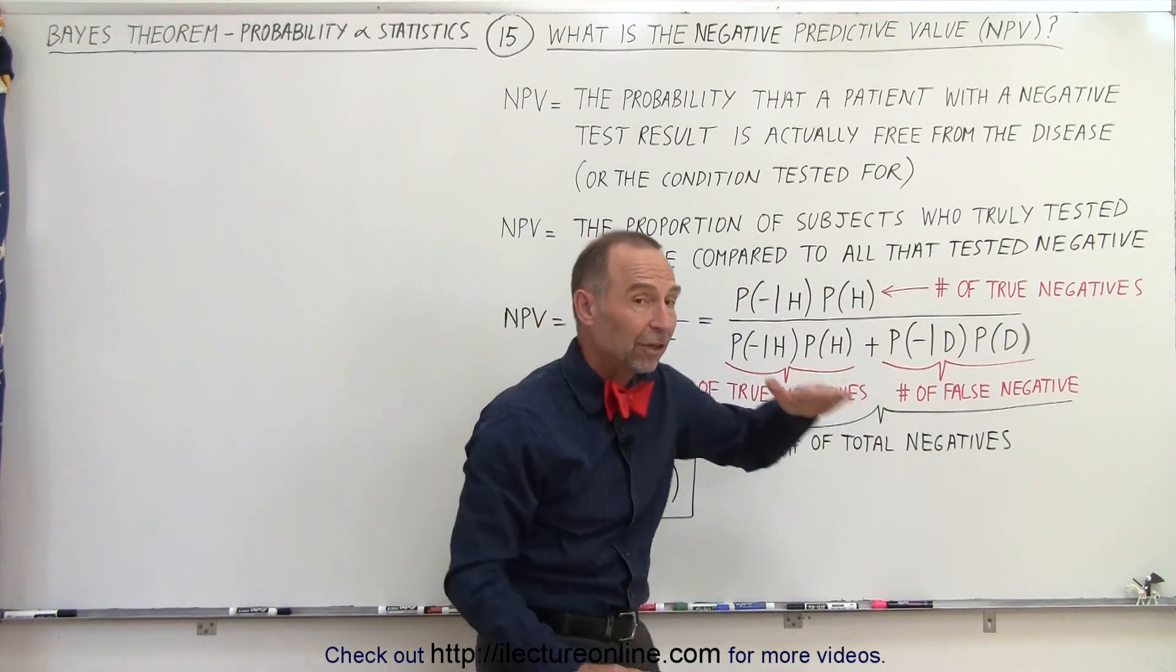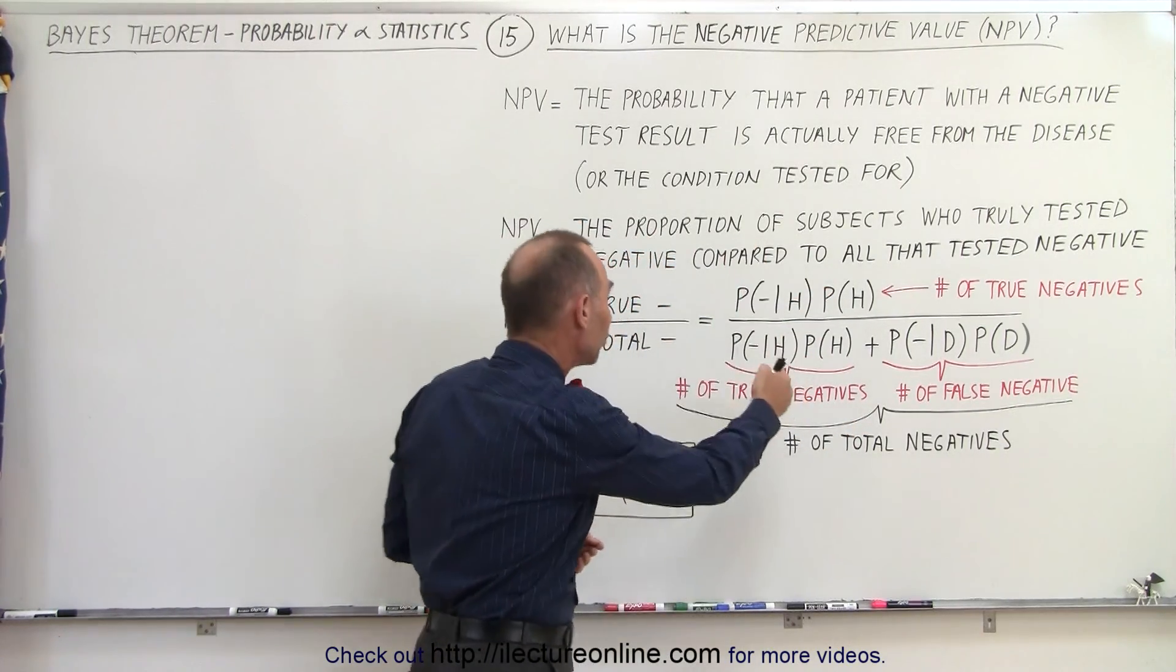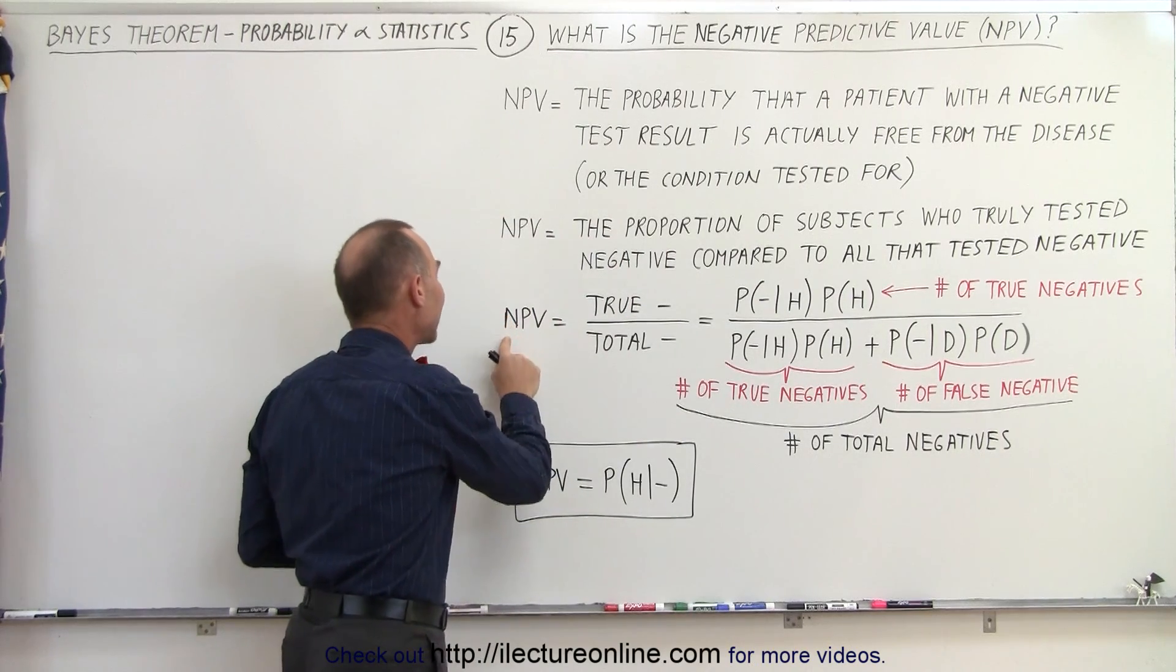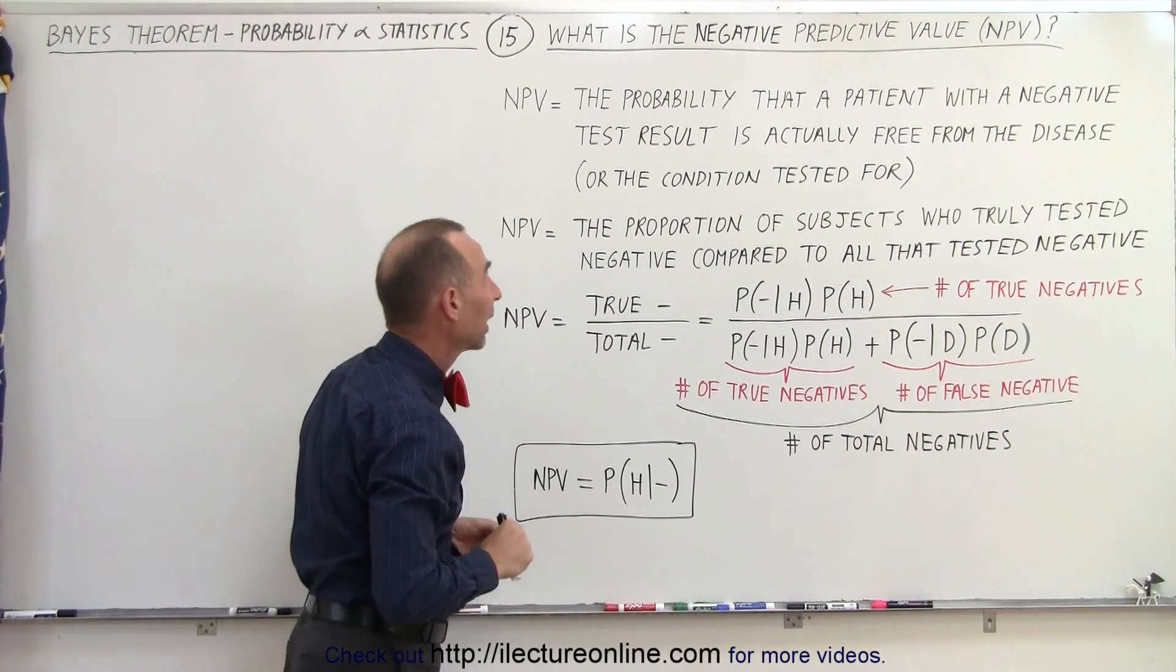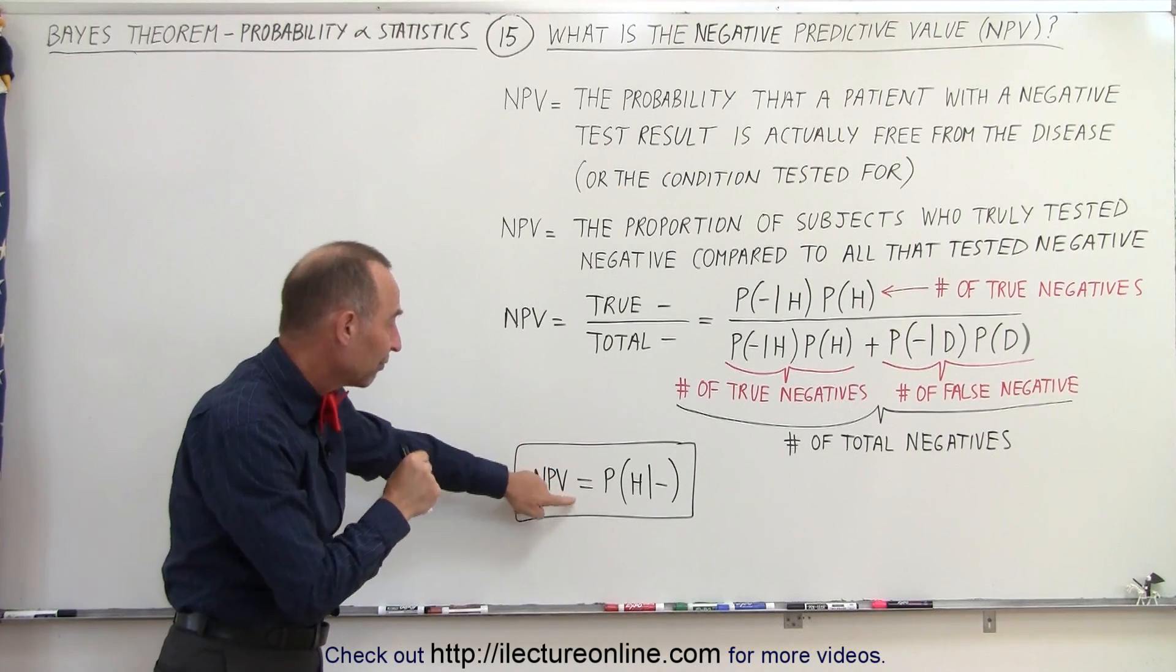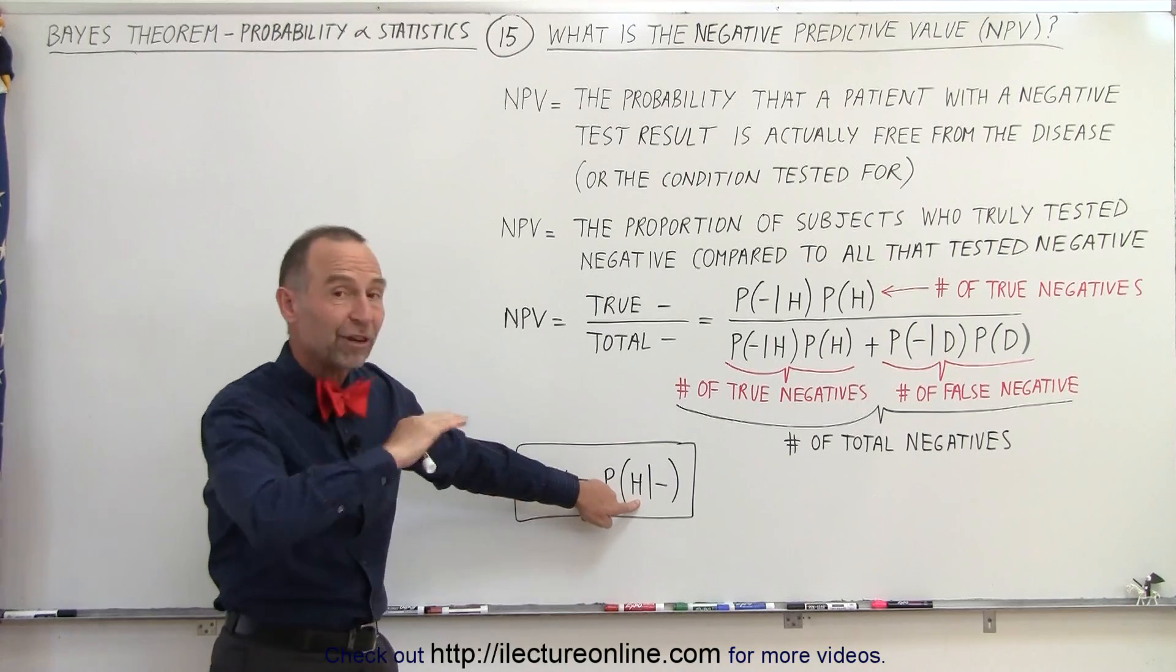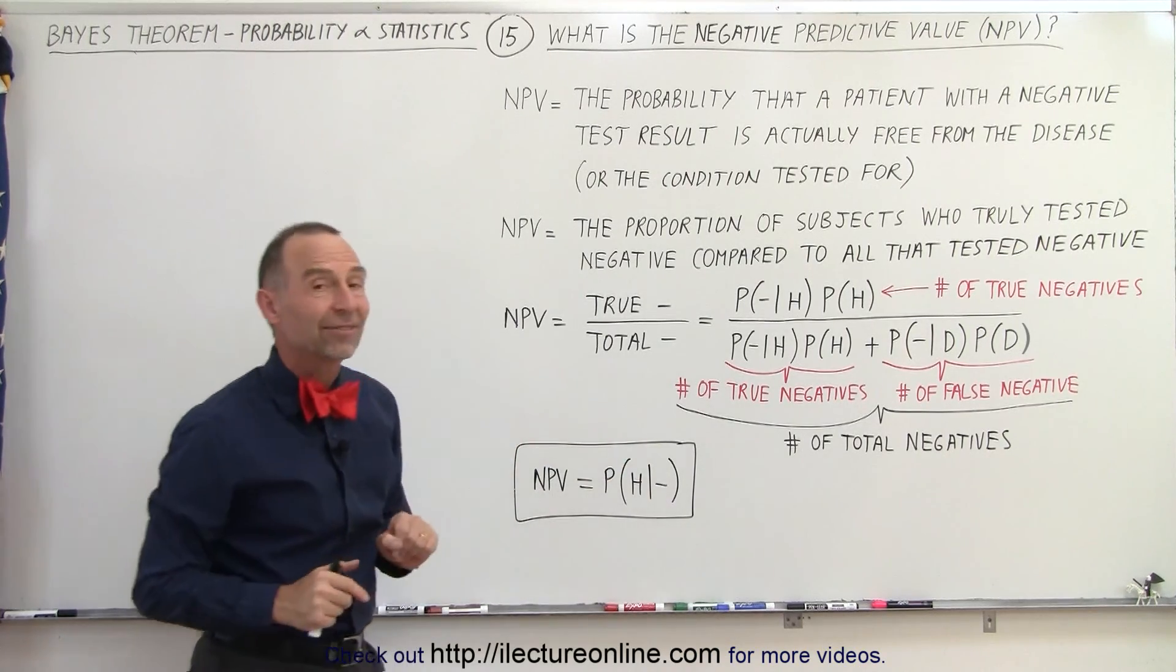The numerator represents the negative test results for those who truly are negative, and that ratio is defined as the negative predictive value. And if you then want to write it for short, you can say the negative predictive value is equal to the probability that you're healthy, that you're free from the condition if you test negative.